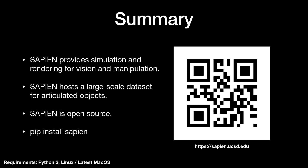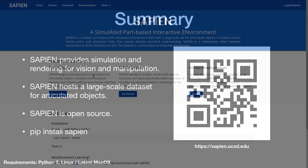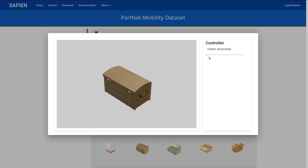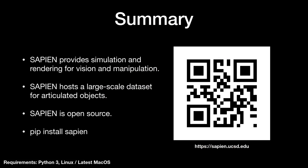To summarize, Sapien provides simulation and rendering for vision and manipulation. It holds a large-scale dataset of articulated objects. Sapien is also fully open-source, and to start using Sapien, it is as simple as pip install sapien. To learn more, you can visit our website, where you can browse and download the assets and code for Sapien. That's all I have about Sapien — thanks for listening.